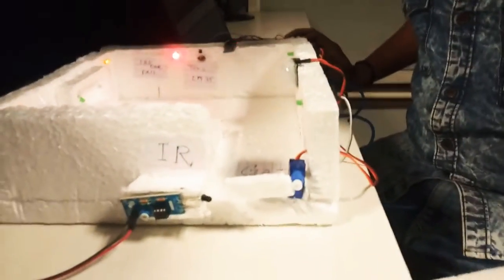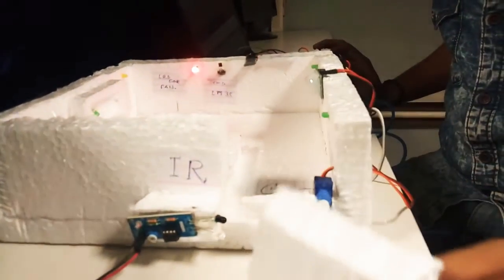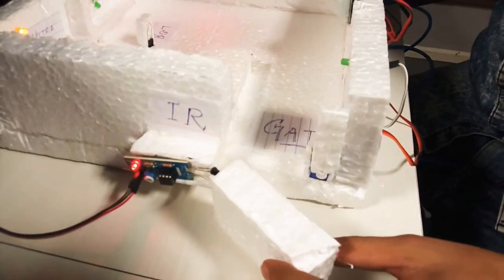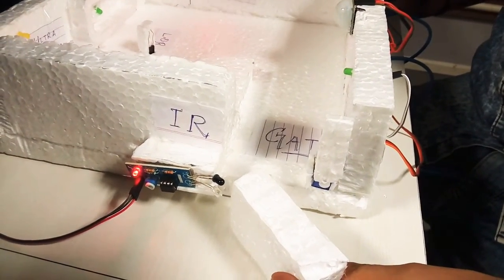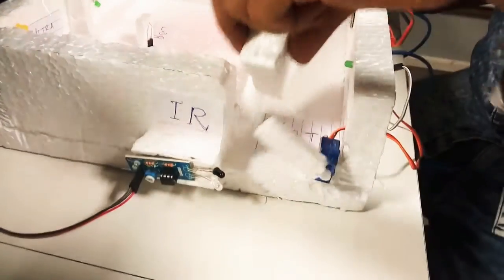First of all we will start with our gate. This is our gate controlled by IR sensor and servo motor. This will detect any motion on the gate and open the gate. We can enter it by this.